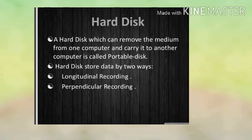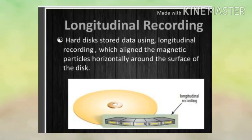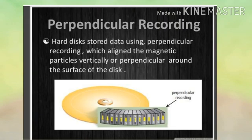A hard disk that can remove the medium from one computer and carry it to another is called a portable disk. Hard disk stores data by two ways: longitudinal recording, which aligns the magnetic particles horizontally around the surface of the disk, and perpendicular recording, which aligns the magnetic particles vertically or perpendicular to the surface of the disk.